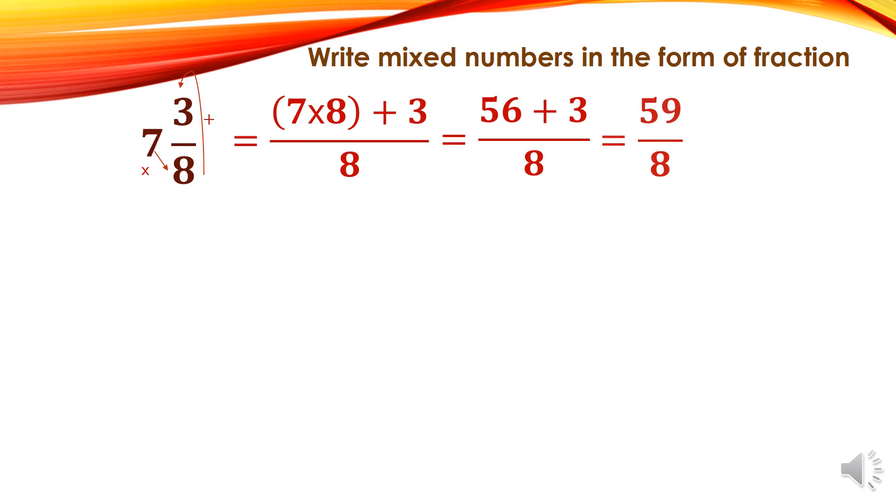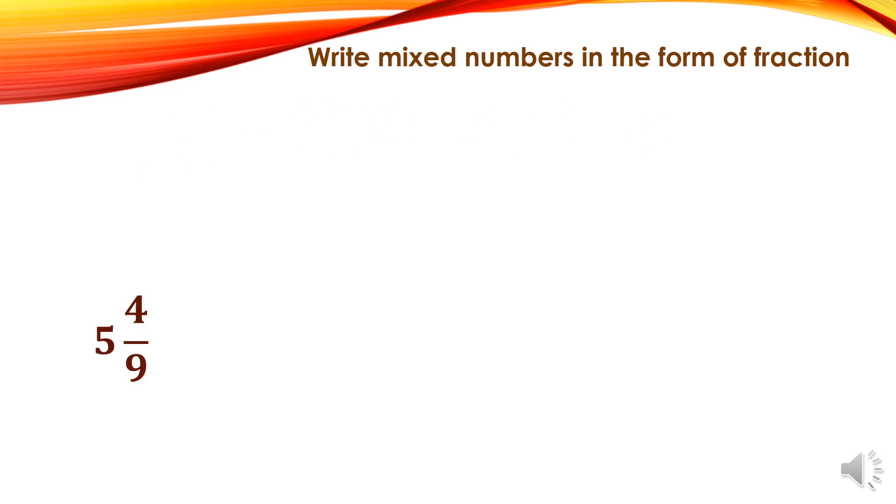Another example: 5 and 4 over 9. First, we have to multiply 5 times 9 plus 4 to get the numerator and I keep the denominator 9 as it is. Then equal 45 plus 4 over 9 equals 49 over 9.